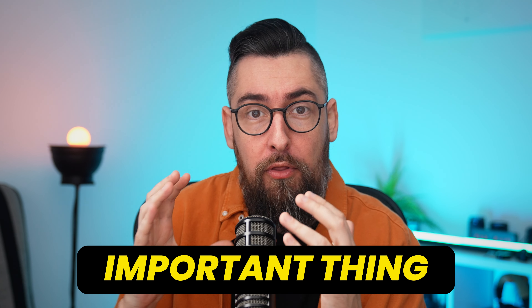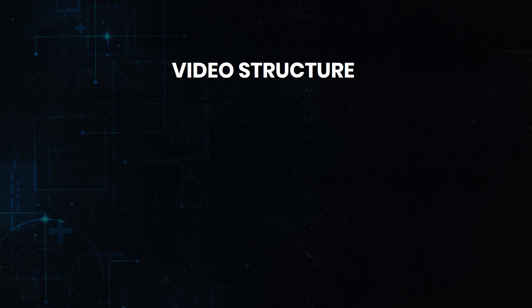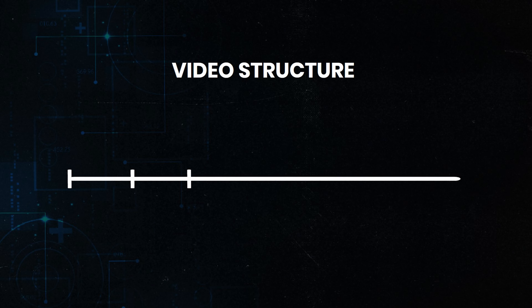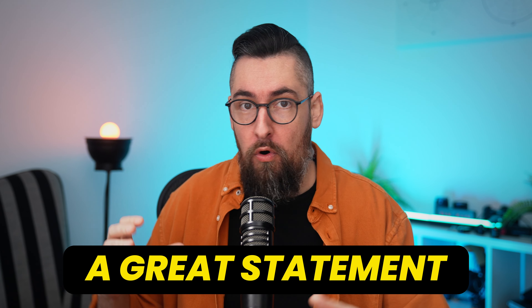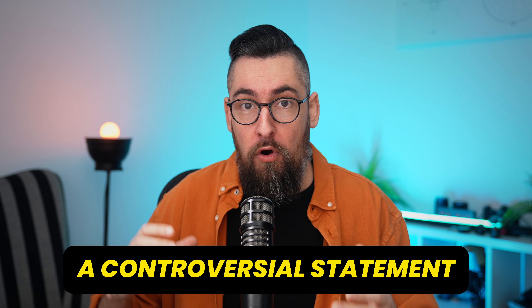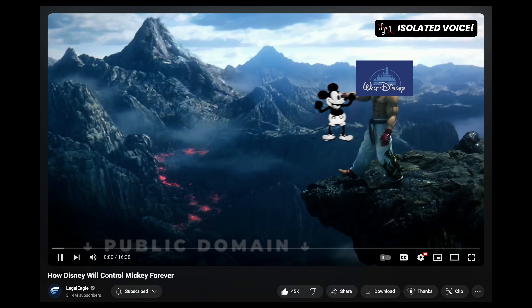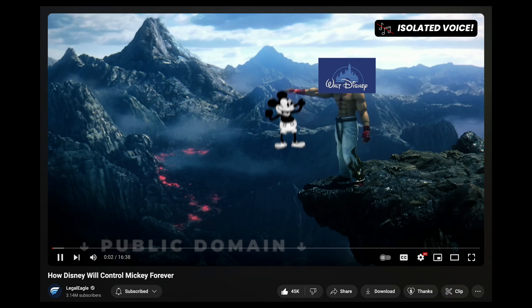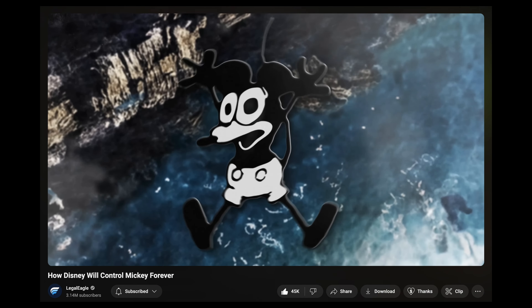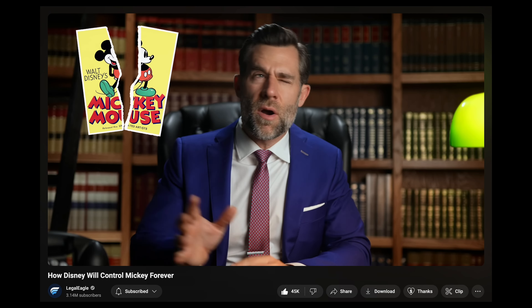Of course I'll show you how to do these tricks easily, but we need to discover one more important thing these creators do to make us watch their videos until the end with interest. Big talking head video creators use specific structures. All big creators start their videos with a great and powerful hook — a big question, a great statement, or a controversial one. For example: 'This is the story of how Disney finally lost the copyright to Mickey Mouse.'